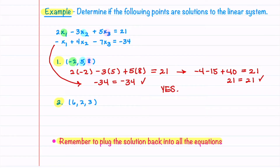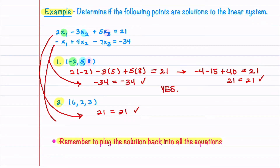We do the same thing with our second point, plugging 6, 2, and 3 into our first equation and getting 21 on both sides — which matches. However, when we plug 6, 2, and 3 into our second equation, we get −19 on the left, which is not equal to −34 on the right. So this point is not a solution to our linear system.